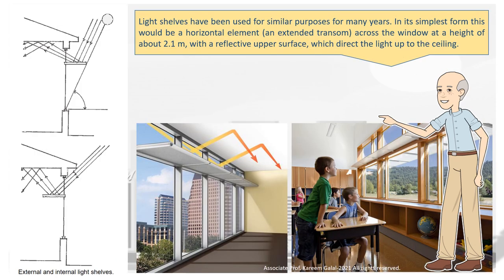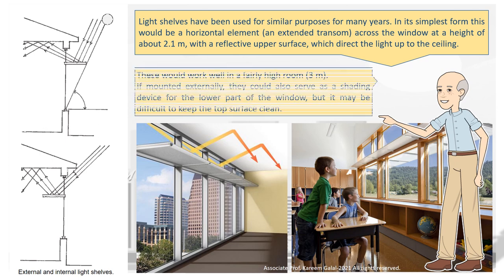Light shelves have been used for similar purposes for many years. In its simplest form this would be a horizontal element — an extended transom — across the window at a height of about 2.1 m, with a reflective upper surface which directs the light up to the ceiling. These work well in a fairly high room of 3 meters. If mounted externally, they could also serve as a shading device for the lower part of the window, but it may be difficult to keep the top surface clean.